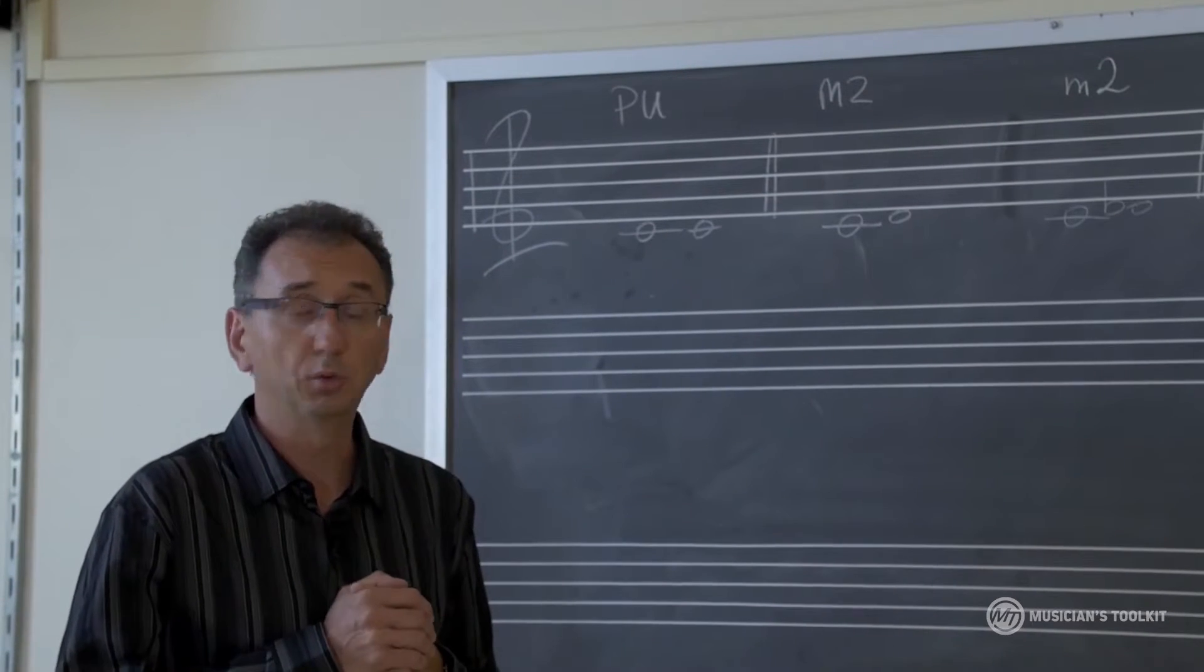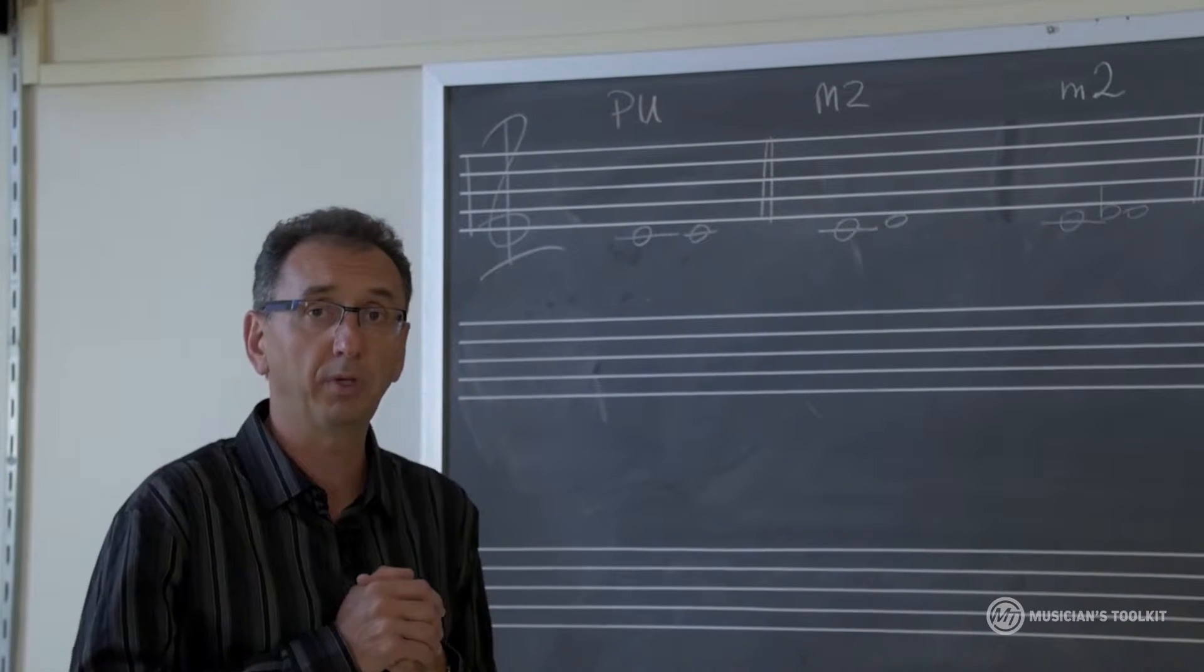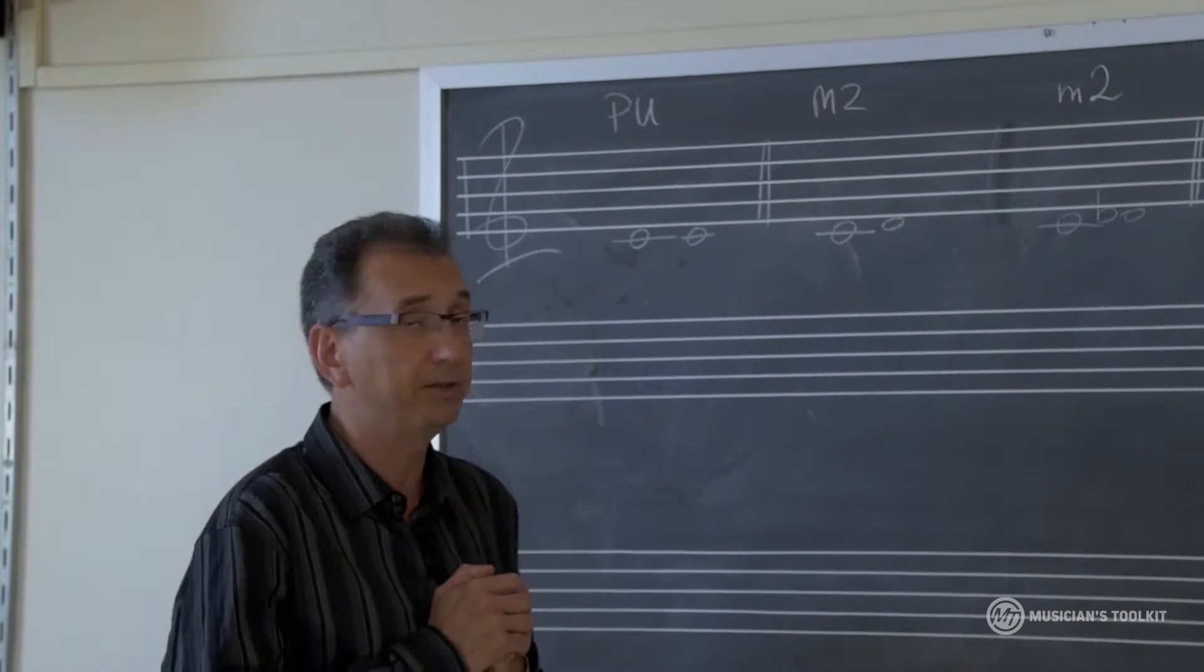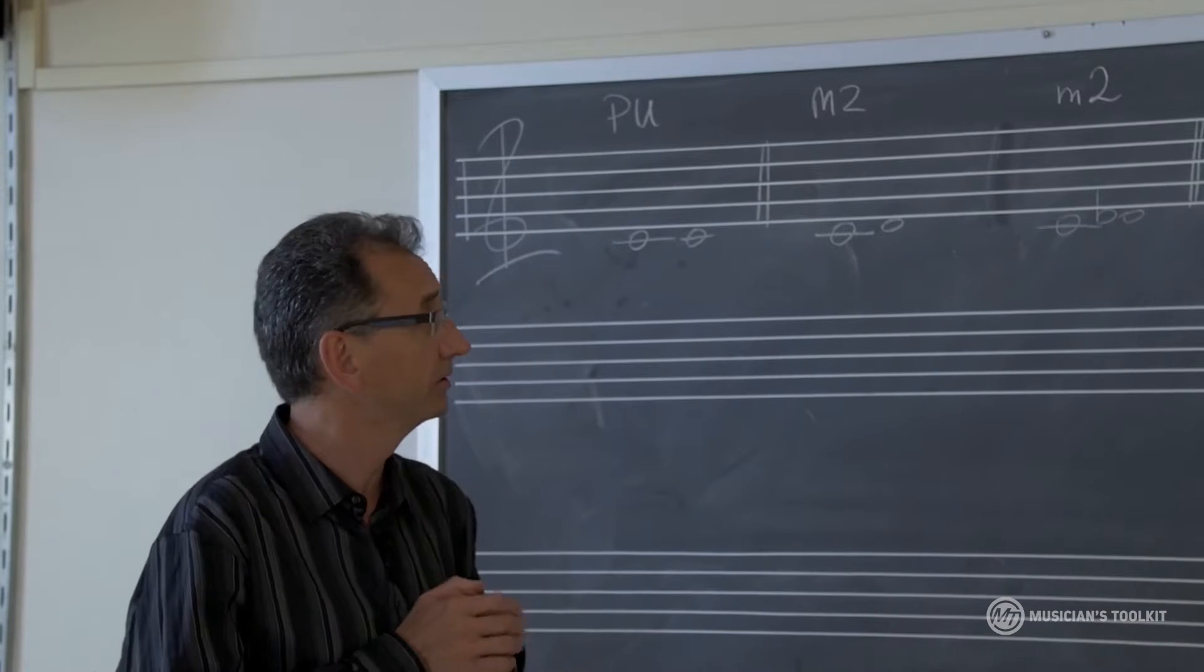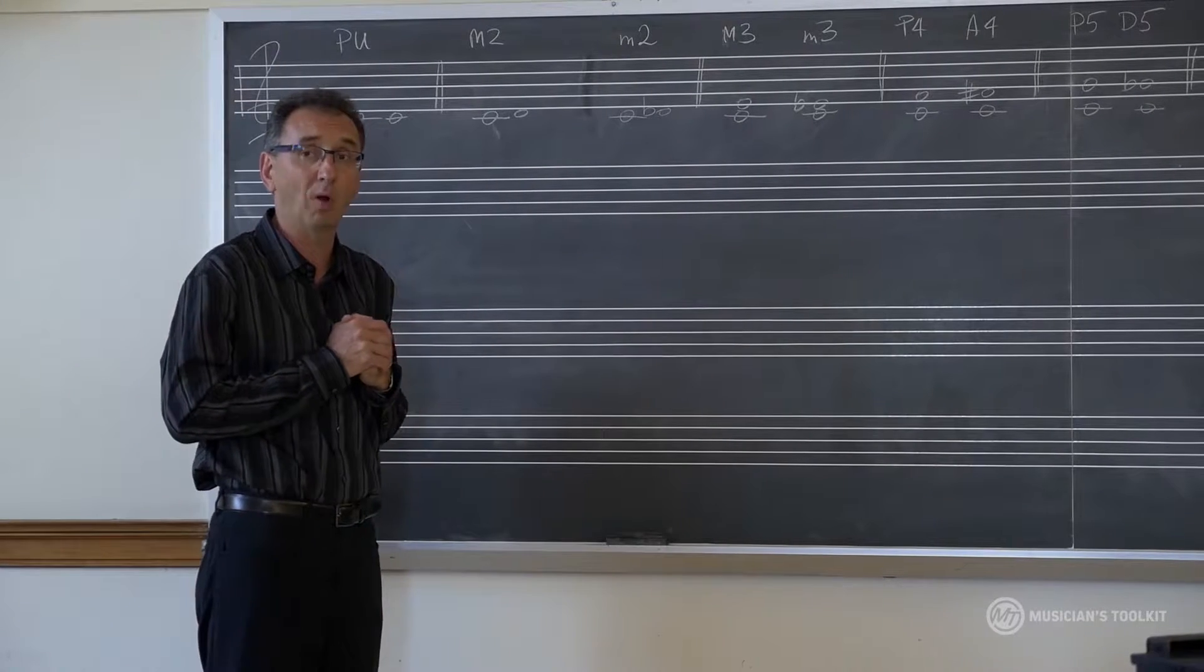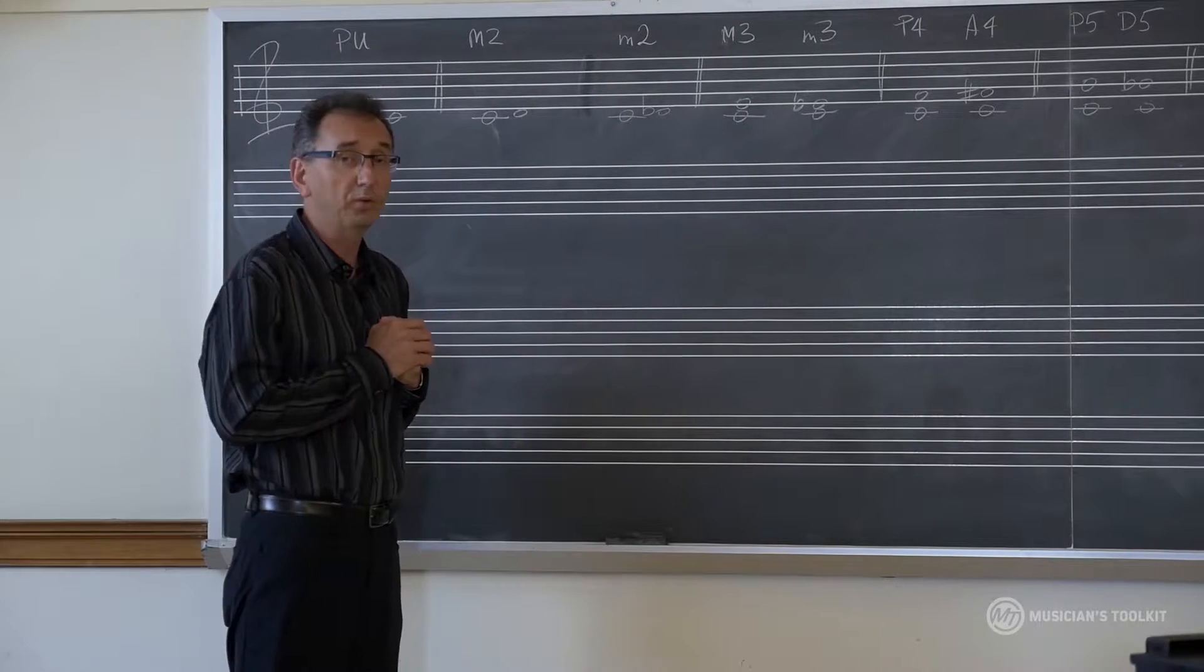Major second has two semitones, is the distance between C and D for instance, two semitones. Minor second is the distance of one semitone, C to D flat.